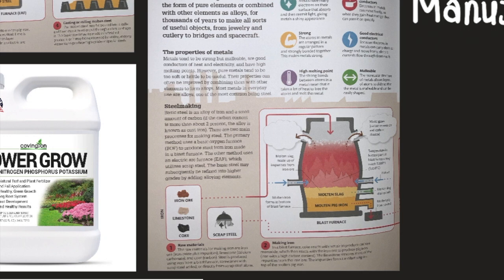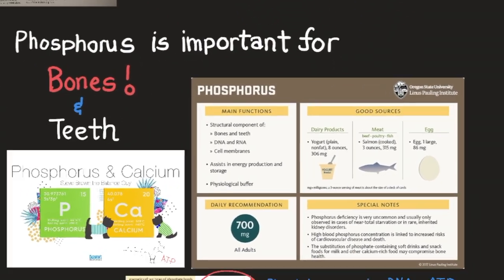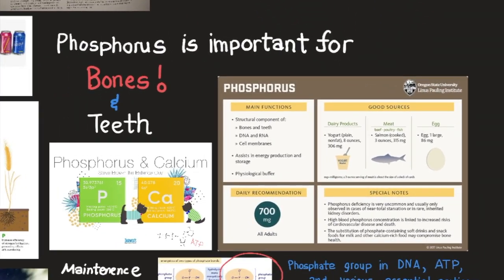We'll talk about basic steel and various other processes, but today we're talking about phosphorus. Phosphorus, as we were mentioning, is important for bones and teeth. Our teeth contain elements such as calcium, and phosphorus is a very essential element to provide structure and rigidity — because pure metals normally aren't as strong as we would prefer them to be.